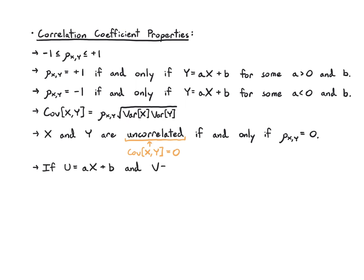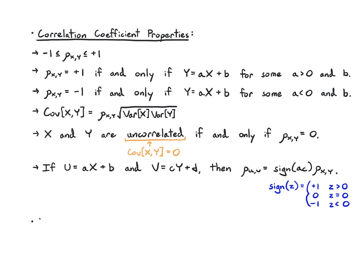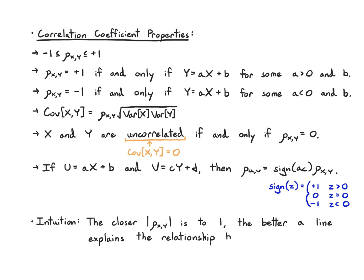If we take linear functions of x and y and ask about the correlation coefficient, all we need to do is check if the sign has changed. The sign is plus 1 if the argument is positive and minus 1 if negative. So if x and y have a relationship captured by rho_xy and we scale them, that scale does not change the correlation coefficient — it may only flip the sign. The closer the absolute value of rho is to 1, the better a line explains the relationship between x and y, regardless of slope, as long as the slope is nonzero.